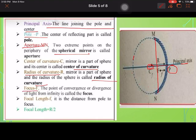Focus: the point of convergence or divergence of light from infinity is called focus. So generally, focus is said to be the half of radius of curvature. Focal length: you can say f is equal to R upon 2. So this is the formula of finding out the focus.